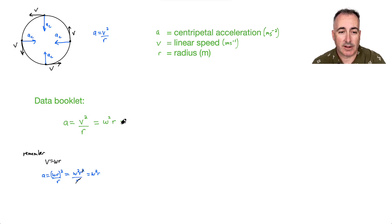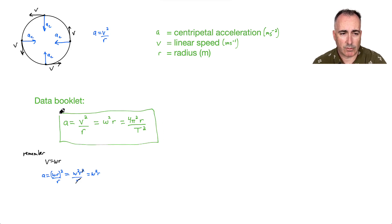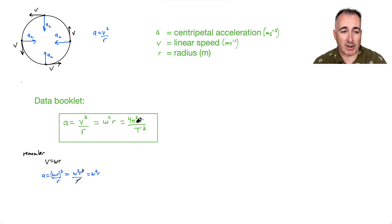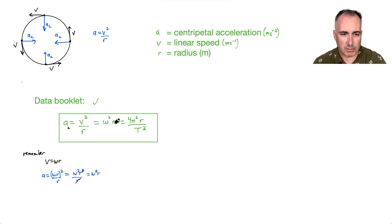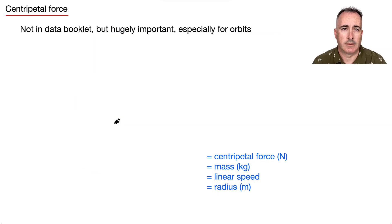There's another version as well: 4 pi squared R over T squared. This is how it looks in your data booklet. I'll derive it shortly as part of the example. You don't have to memorize these since they're in the data booklet, but it's important to know how to use them. I personally like to put a little C subscript to indicate it's the circular acceleration.